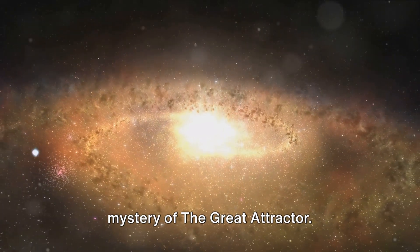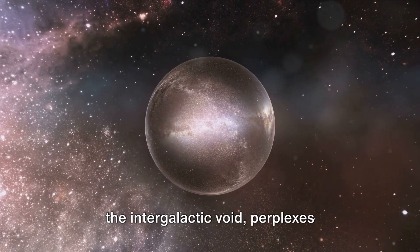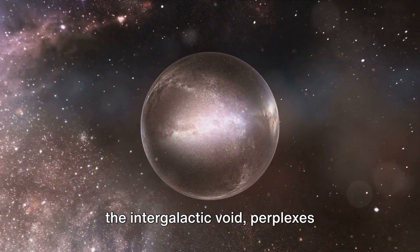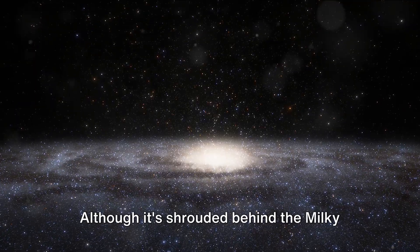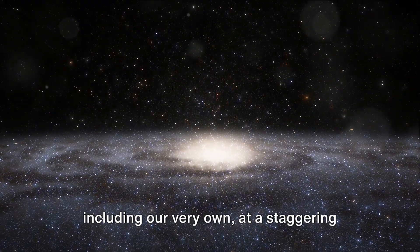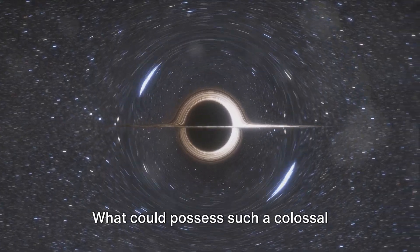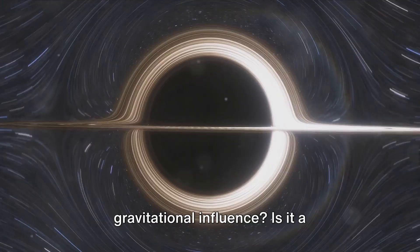At number 9, we delve into the mystery of the Great Attractor. This gravitational anomaly located in the intergalactic void perplexes scientists with its immense pull. Although it's shrouded behind the Milky Way, it's drawing galaxies toward it, including our very own, at a staggering speed of over a million miles per hour. What could possess such a colossal gravitational influence?